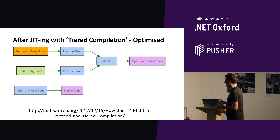If you're running under .NET Core 3 — and I think 2.2 — this is turned on by default. It does make it a bit confusing for people doing benchmarks because you now have to run your method about 30 times before you see the optimized version. But PerfView and other tooling will tell you which version of the method it is at that point.